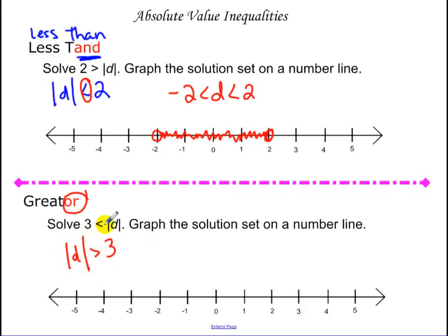So, the numbers whose distance from 0 is greater than 3 units. Well, that's everything less than negative 3, so d has to be less than negative 3 or anything greater than 3. Because all of these numbers, their distance from 0 is greater than 3.